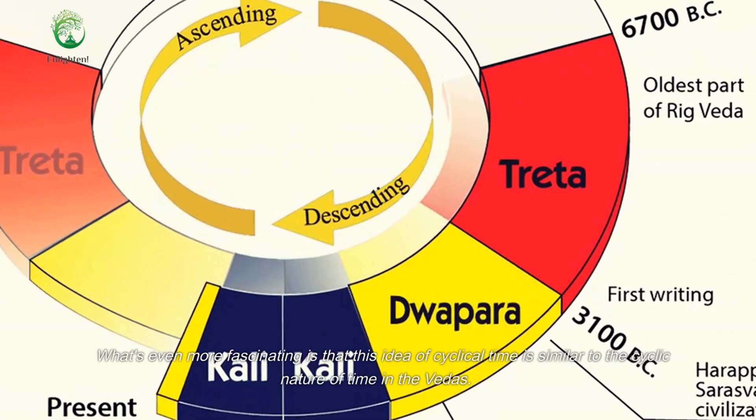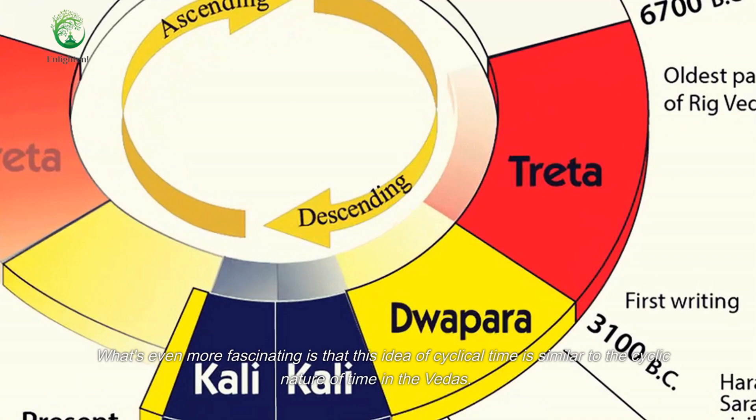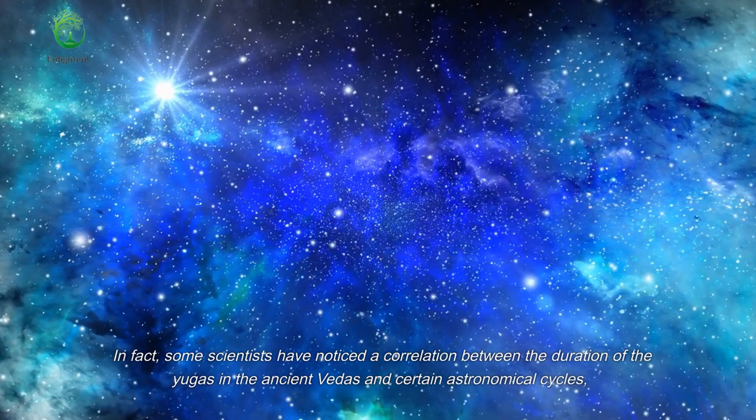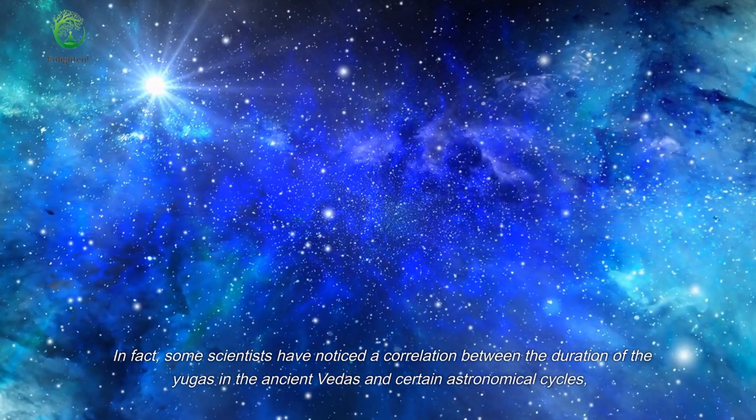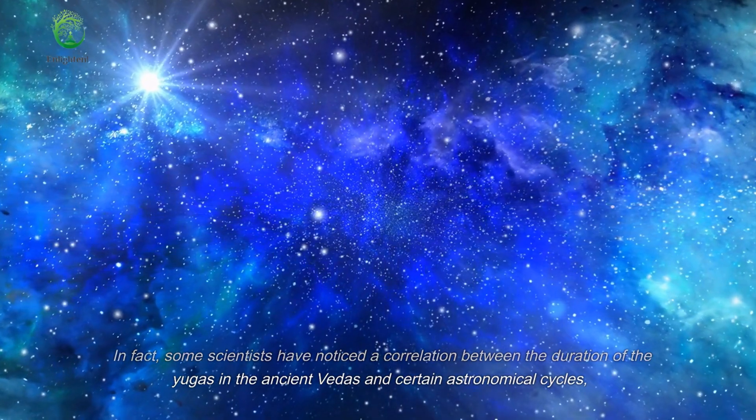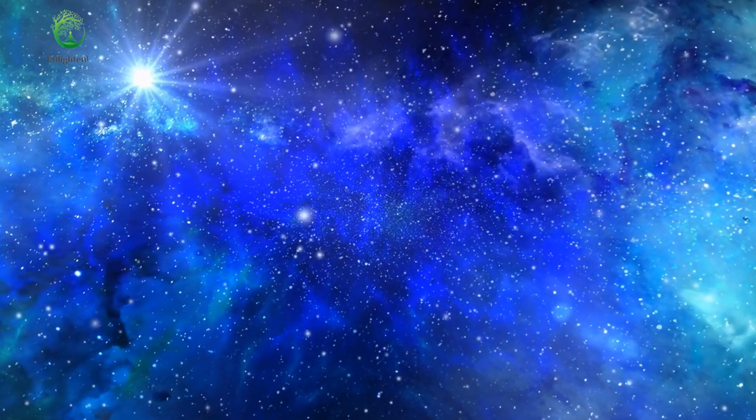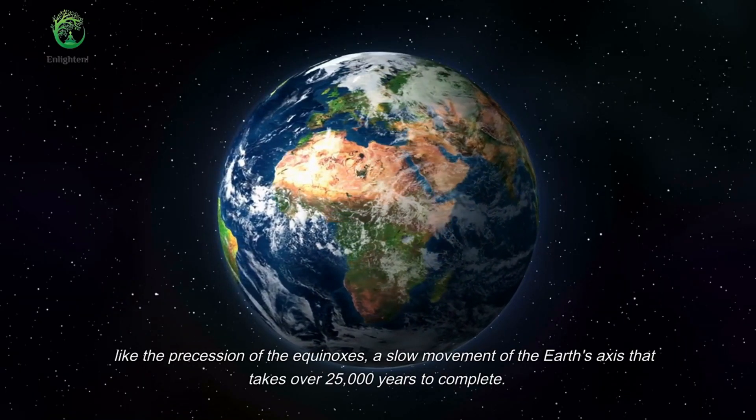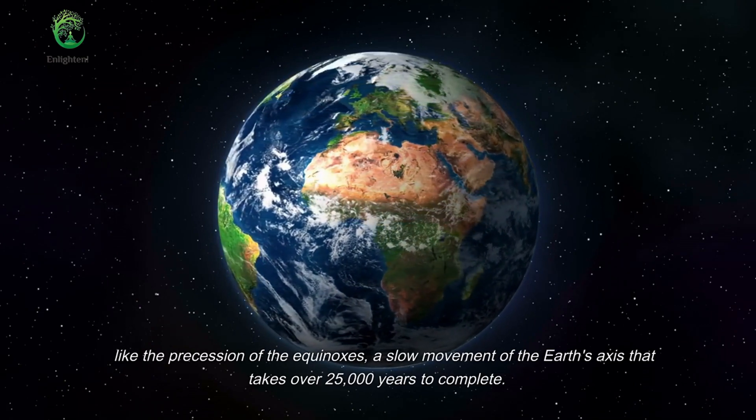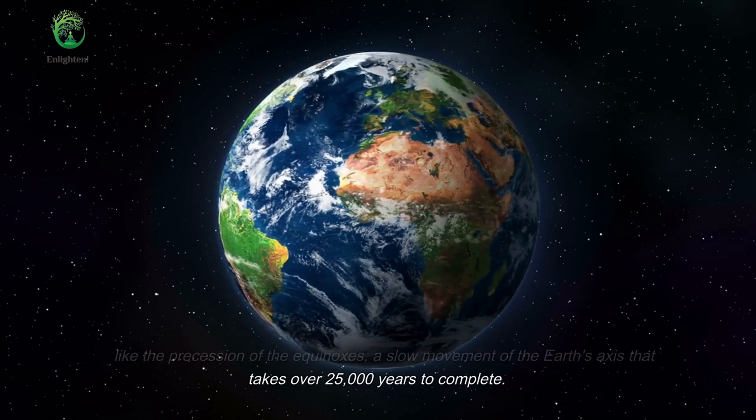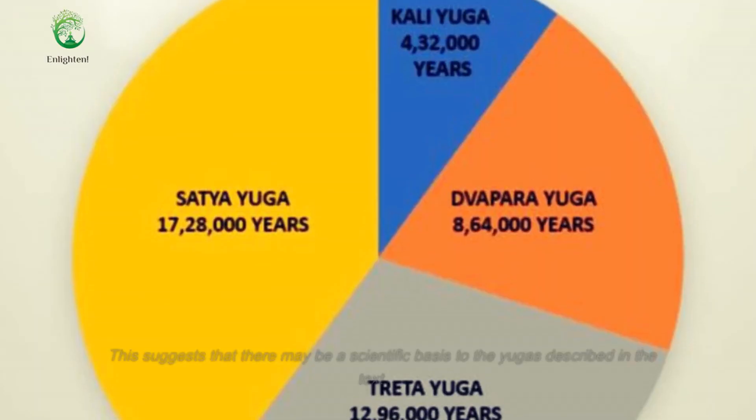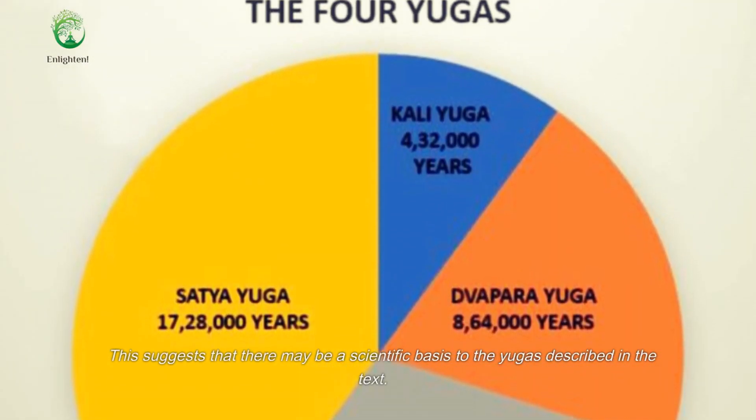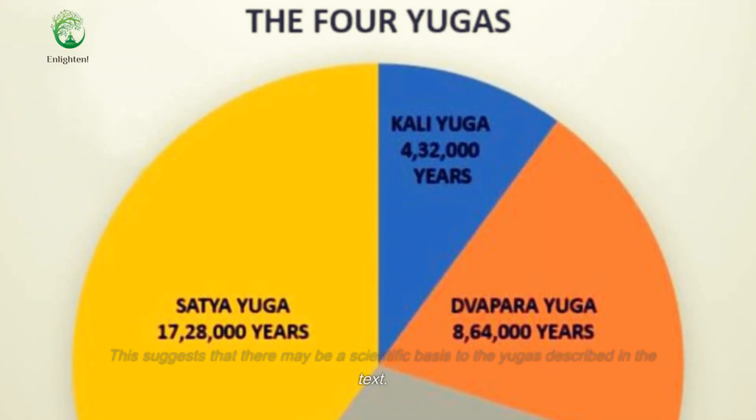What's even more fascinating is that this idea of cyclical time is similar to the cyclic nature of time in the Vedas. In fact, some scientists have noticed a correlation between the duration of the yugas in the ancient Vedas and certain astronomical cycles, like the precession of the equinoxes, a slow movement of the Earth's axis that takes over 25,000 years to complete. This suggests that there may be a scientific basis to the yugas described in the text.